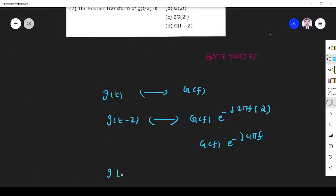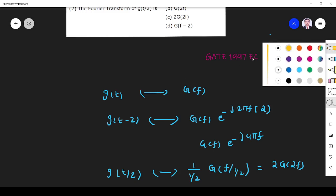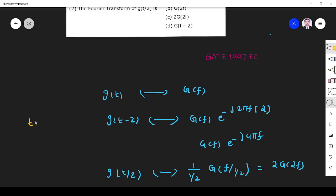Next is g(t/2). g(t/2) means it is 1 by 1/2, G(f divided by 1/2). So that is 2 times G(2f). For this, it is time-scaling property. So this is time-shifting property, and this is time-scaling property.